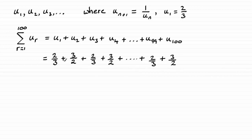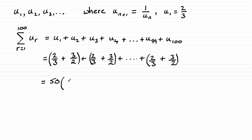Now we have a hundred terms, but this pattern of two thirds plus three over two — if I put that in brackets — must occur half the number of times, so 50 times. So what we've got is simply 50 lots of two thirds plus three over two.